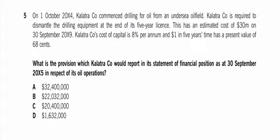On the 1st of October, Calatra commenced drilling for oil. They require to dismantle — if you have to dismantle something in the future, you bring it in at its present value.